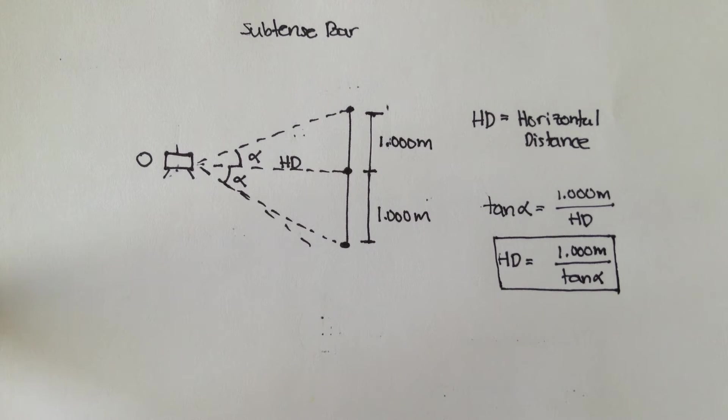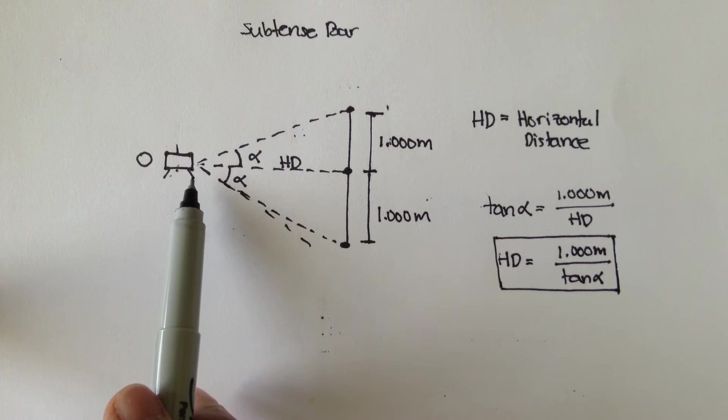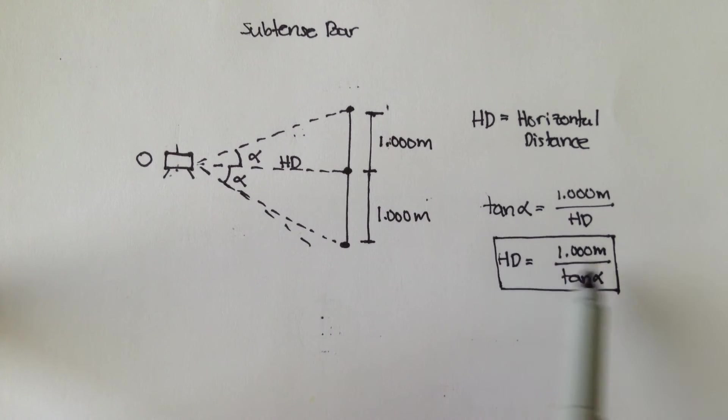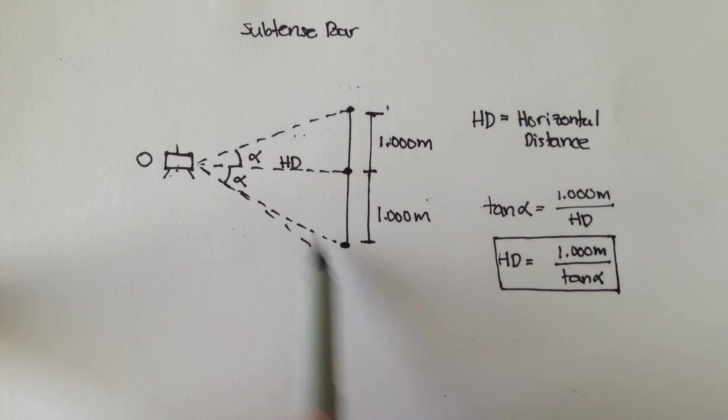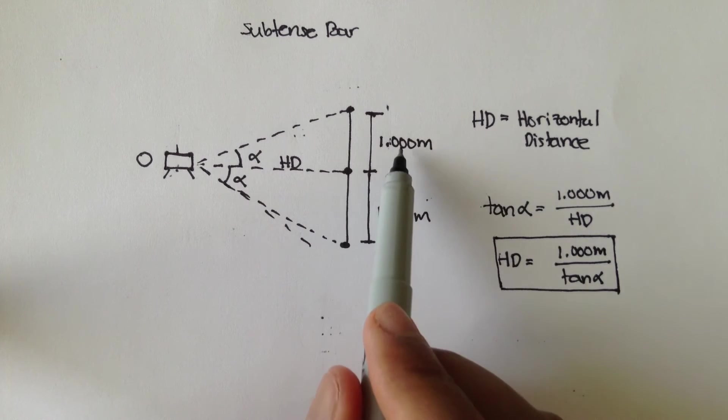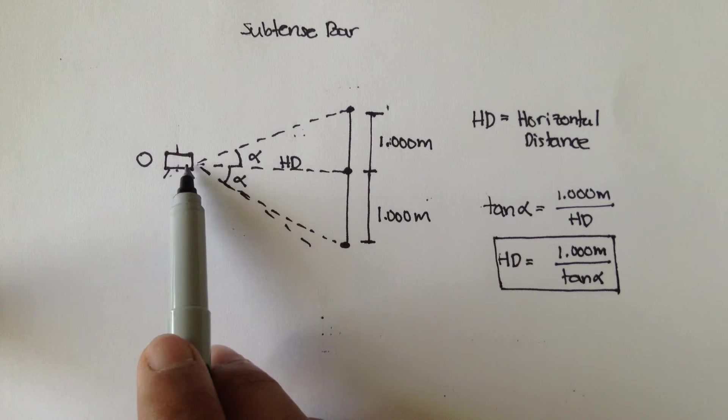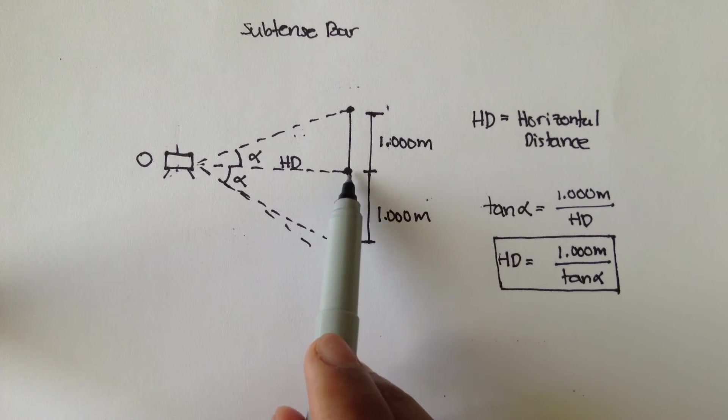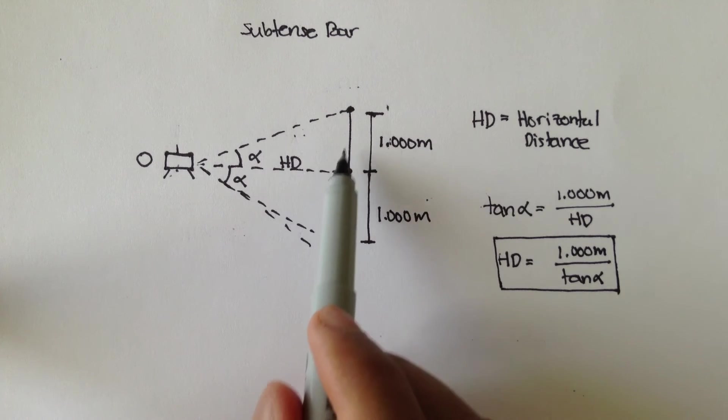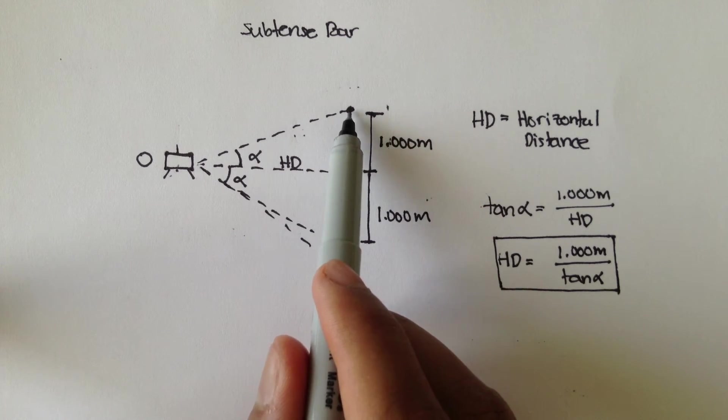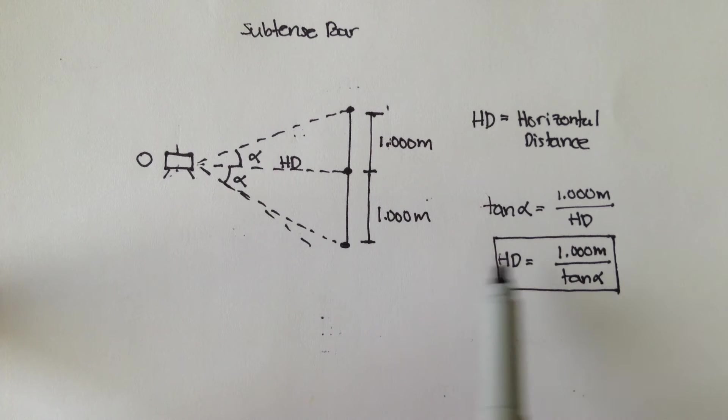So the approximate horizontal distance using a subtense bar is 1 meter, or whatever half of the subtense bar is. In this case, it's a 2 meter subtense bar, so half of that would be 2. And it's assuming you sight to the middle of the subtense bar. Then you figure out your angles by sighting to the ends of this bar. Using trigonometry, you can figure out the horizontal distance is 1 over tan alpha.